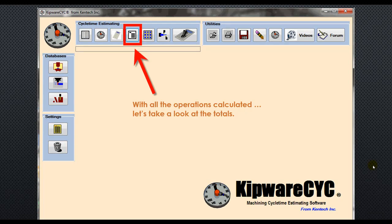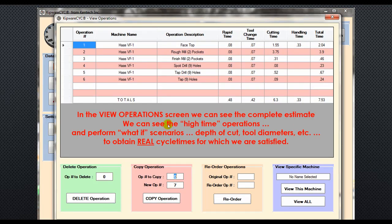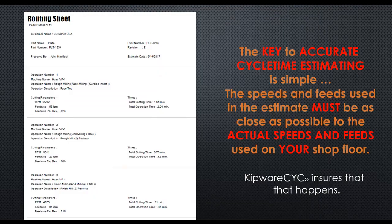With all the operations calculated, let's take a look at the totals. In the view operation screen inside Kipware CYC, we can see the complete estimate. We can view the high-time operations and even perform what-if scenarios by changing the depth of cut or tool diameters to obtain real cycle times. The key to accurate cycle time estimating is simple: the speeds and feeds used in the estimate must be as close as possible to the actual speeds and feeds used on your shop floor. Kipware CYC ensures that that happens.